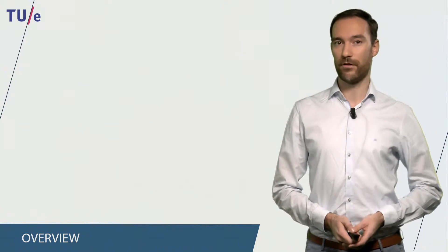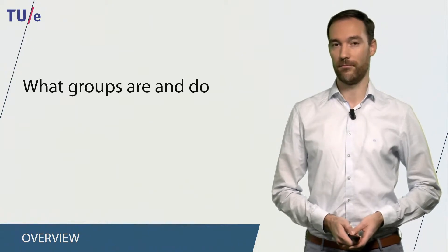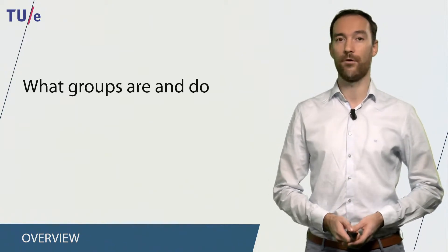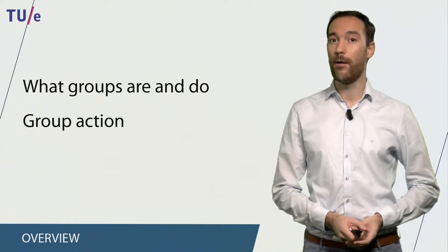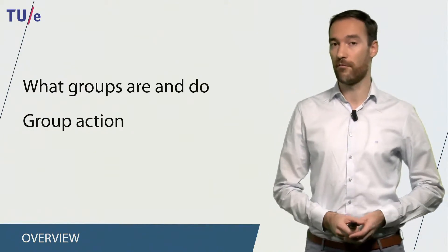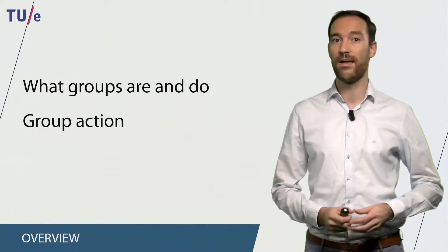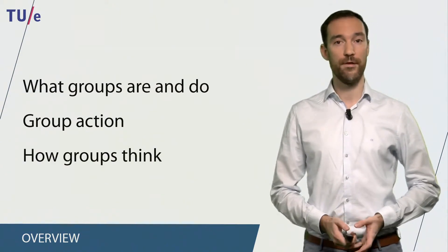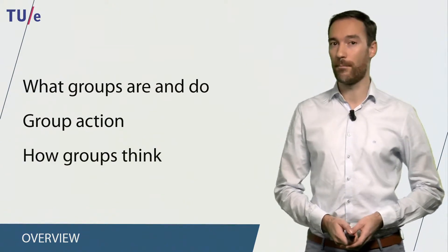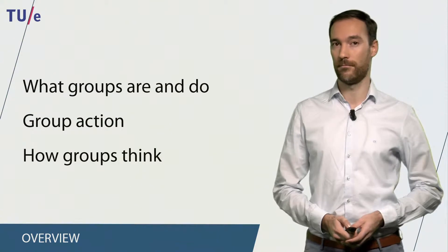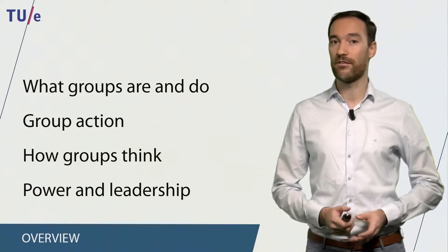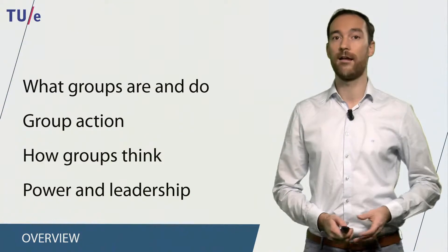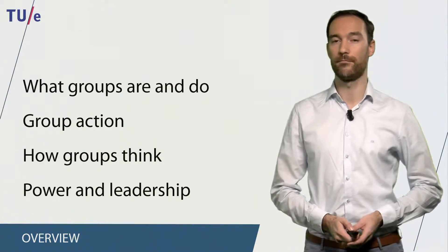This web lecture will be divided into four different sections. In the first section I will explain what groups are and what they do. After that I will explain how the individual behavior of members of a group influence group action. Then I will explain how groups think and how members can influence one another. Finally, I will present criteria for successful or unsuccessful leadership and explain what power does to people.